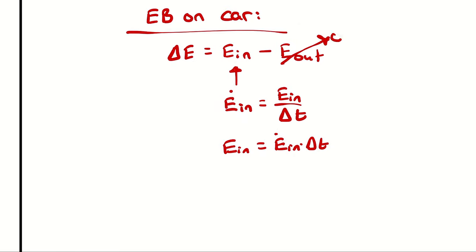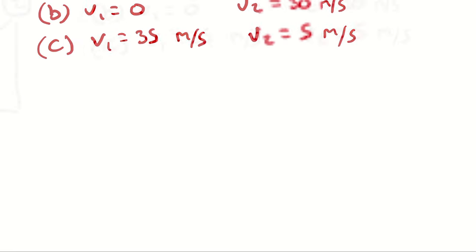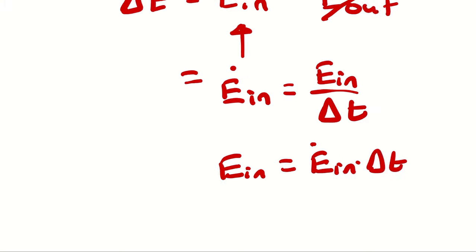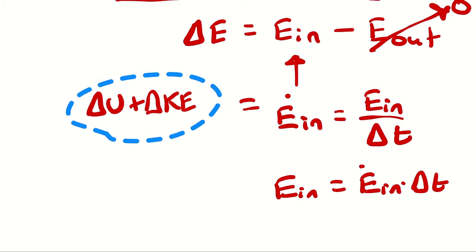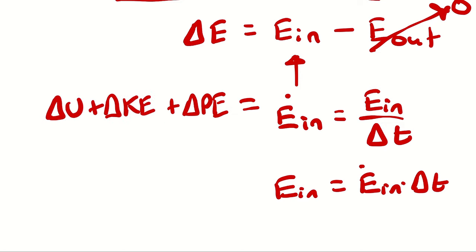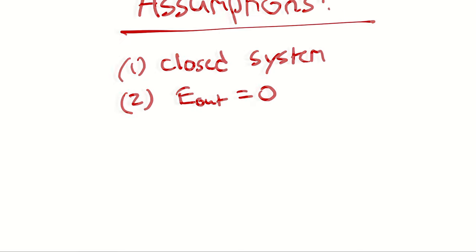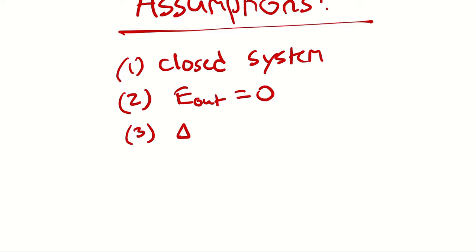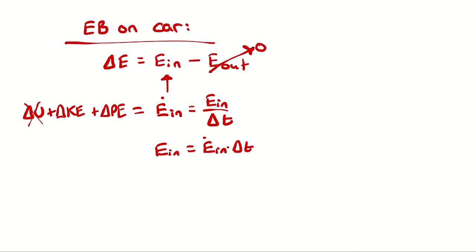We are neglecting energy exiting because we don't have enough information to determine it. And like in the previous example, the energy change of the system — which could be delta U, delta KE, and/or delta PE — is not going to include internal energy. So we are neglecting any internal energy changes of the car. It's important to note that the change in internal energy is zero — not that there is no internal energy; we're just saying it isn't changing.